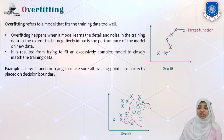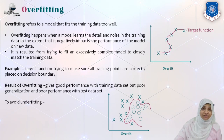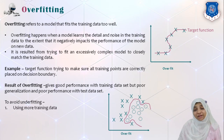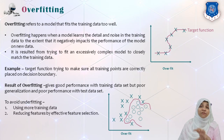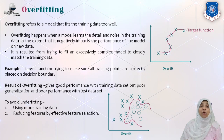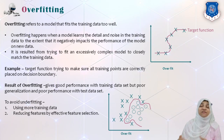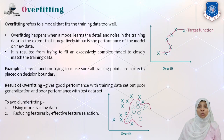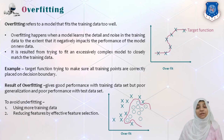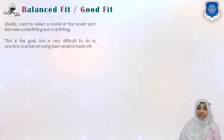In classification, overfitting draws a fine line that separates two groups very clearly without generalizing. The result is that even though it gives good performance on training data, there is very poor performance on test data due to poor generalization. To avoid overfitting, we can use as many samples as possible in training data and also reduce features through effective feature selection.